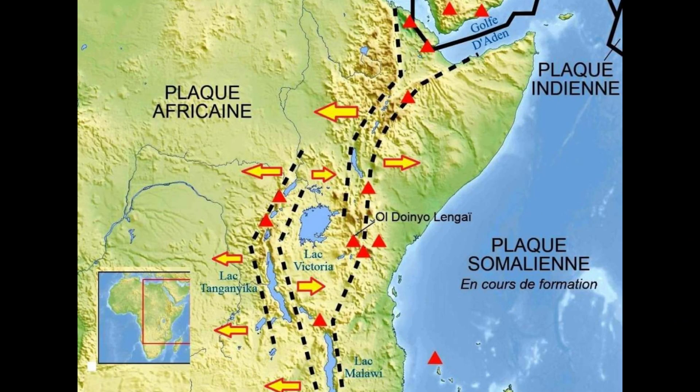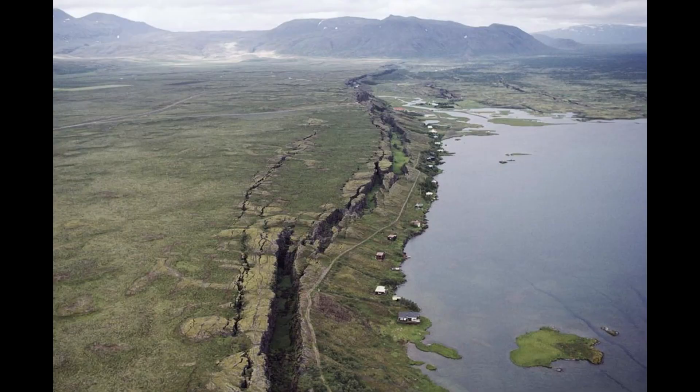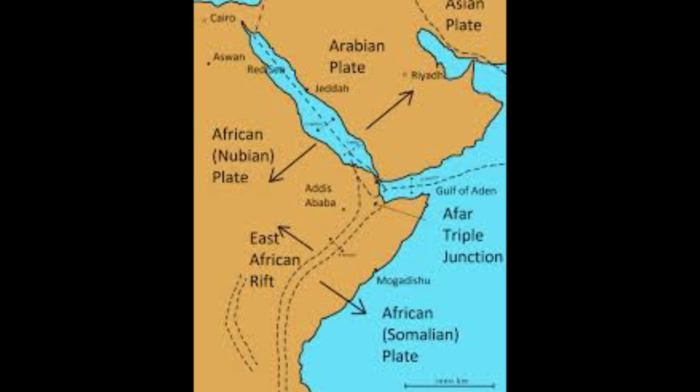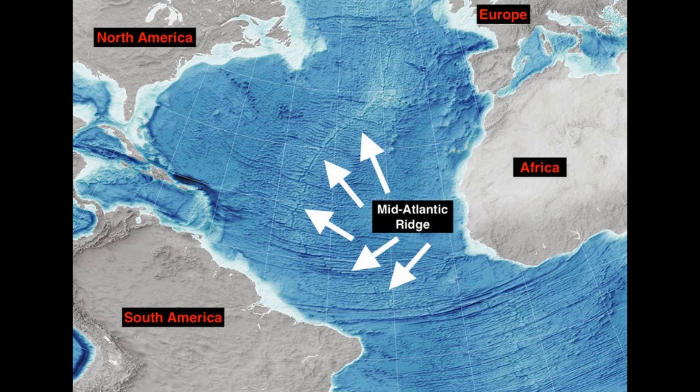Real-world examples of divergent boundaries include the Atlantic Ocean, the Red Sea, and the Great Rift Valley in Africa. We can't watch an ocean open completely in our lifetime, but we have snapshots. The Great Rift Valley shows continental rifting as the first step — Africa is being torn in two, with most of Africa moving west while the east coast moves east on a different plate. Eventually it will separate, erupt basaltic material, form a narrow ocean like the Red Sea, and finally a well-developed ocean like the Atlantic.